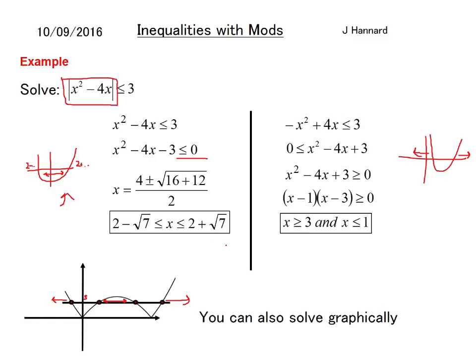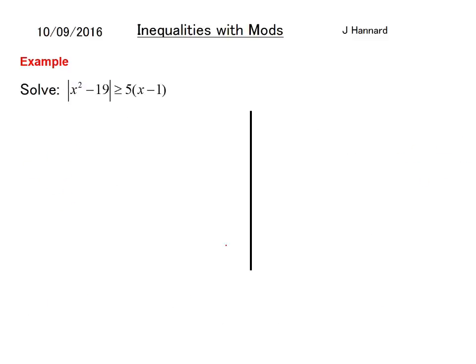Right then. Let's do another one. So split your page in half. You've got the mod of X squared minus 19 is greater than 5 brackets X minus 1. So the first way is X squared minus 19 is less than the expansion of the brackets. Tidying up you end up with that. Which is factorized to that.